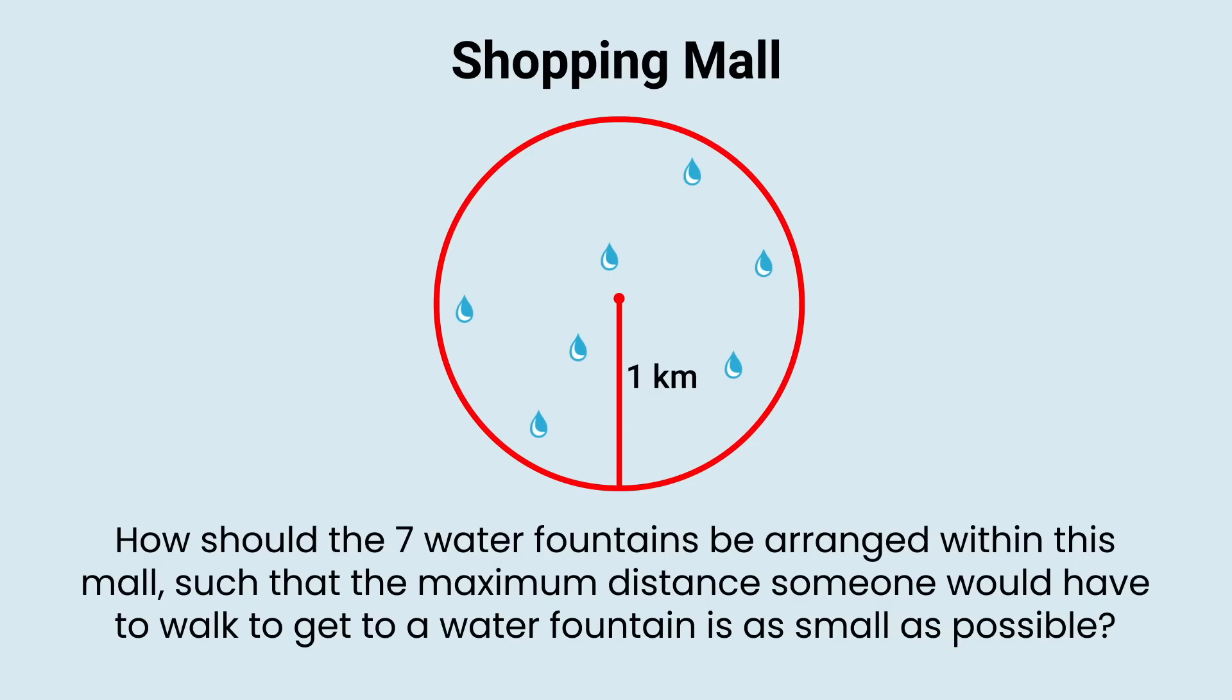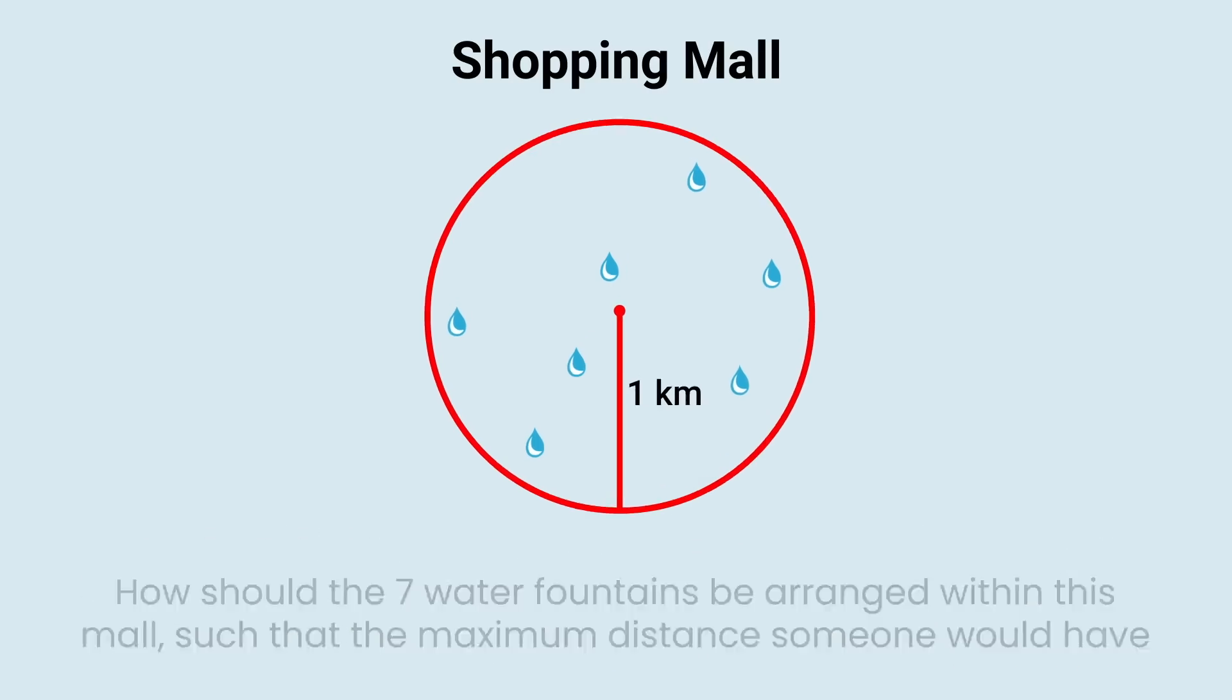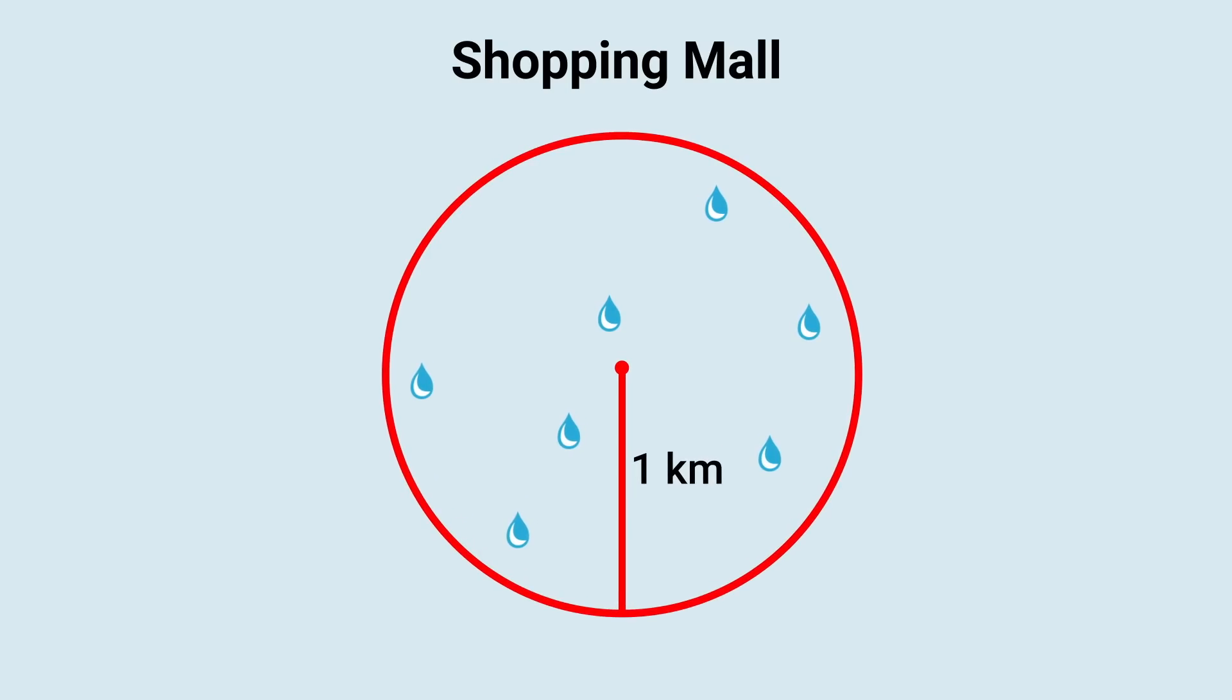And also, what exactly is that worst case scenario distance? We're assuming straight line distances for everything by the way, as in you can always walk in a straight line in this mall without running into anything.